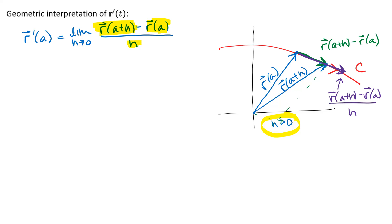When I take the limit as h approaches zero, two things happen. First, the terminal point of r(a + h) gets closer and closer to the terminal point of r(a), so the difference vector gets smaller and smaller. Second, I'm dividing by a smaller and smaller value of h, which is like multiplying by a larger and larger number. Those two effects balance out, and provided the limit exists, I end up with a limiting vector — drawn here in bright turquoise — as the second point comes in and the difference vector shrinks.